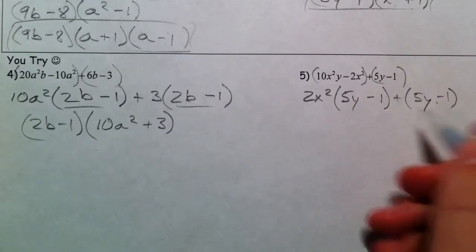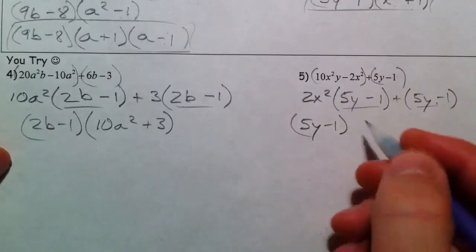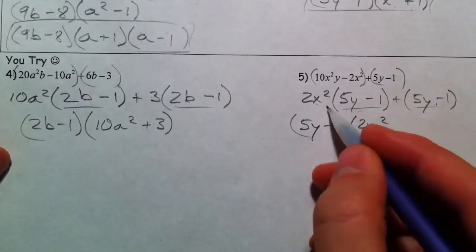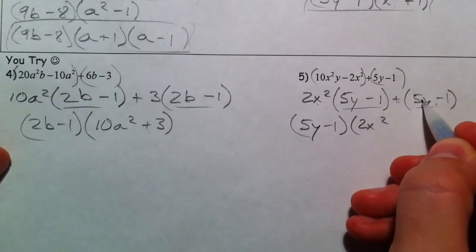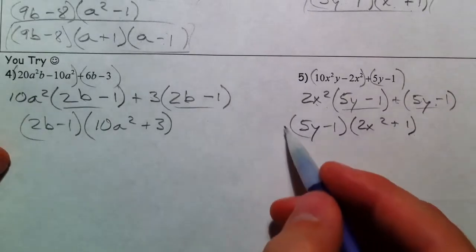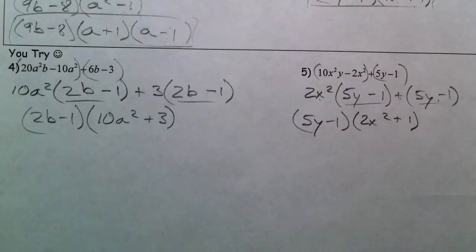So we're good. Factor out 5y minus 1, and that leaves 2x squared. Plus, when you take it out of itself, anything divided by itself is 1. So don't forget that. And then, that is factoring by grouping.